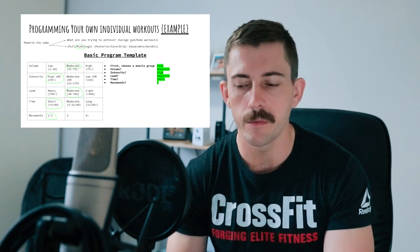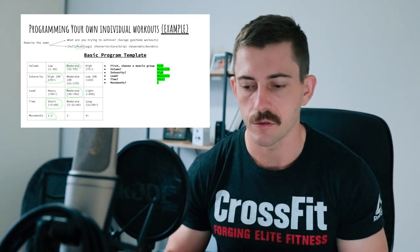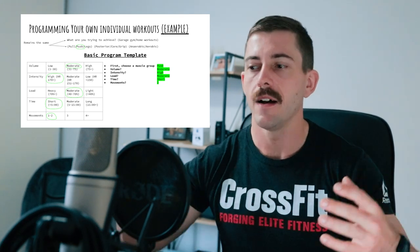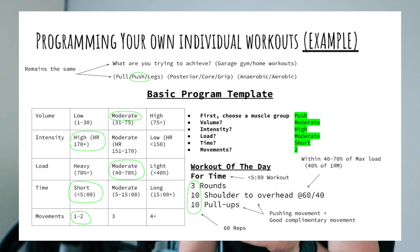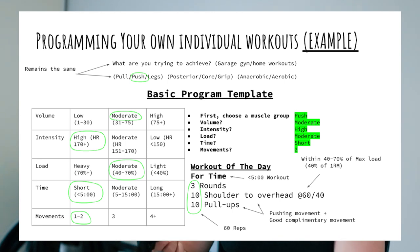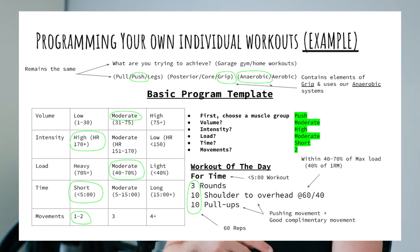We're choosing two movements. The sweet spot for movements is normally between two and three — couplets and triplets make up the core of CrossFit, are easy to remember, and allow you to move through movements without attacking the same stimulus repeatedly. The workout I've come up with is: for time, three rounds of 10 shoulder-to-overhead and 10 pull-ups at 60kg/40kg. It's within 40-70% of max load, totals 60 repetitions for a moderate range, is mostly a pushing movement with a complementary pull-up to allow shoulder recovery between sets.